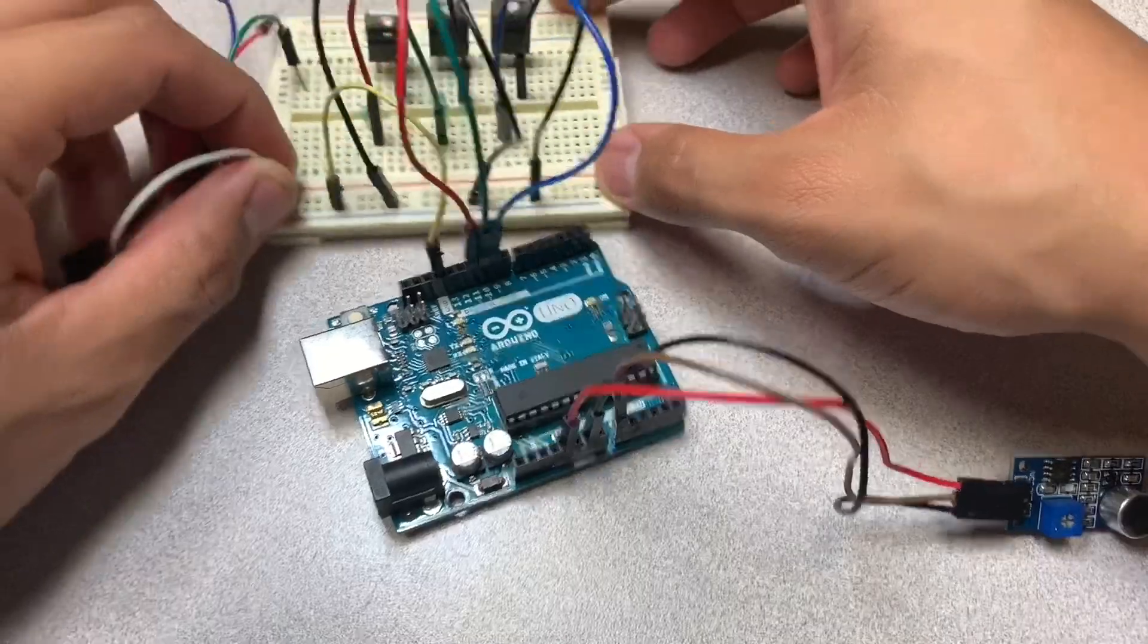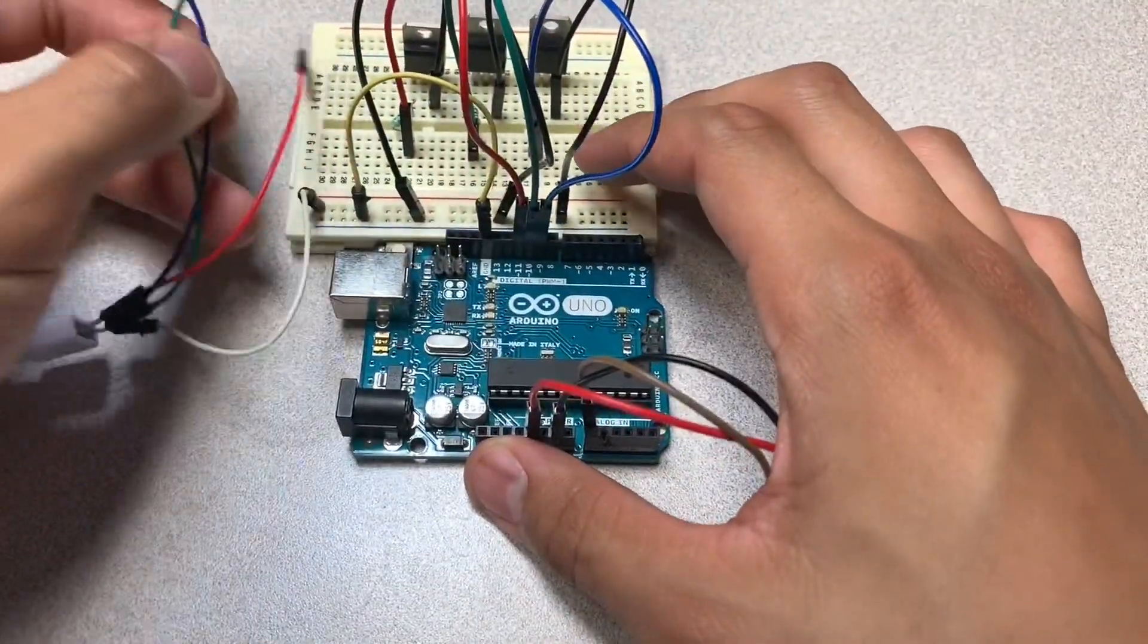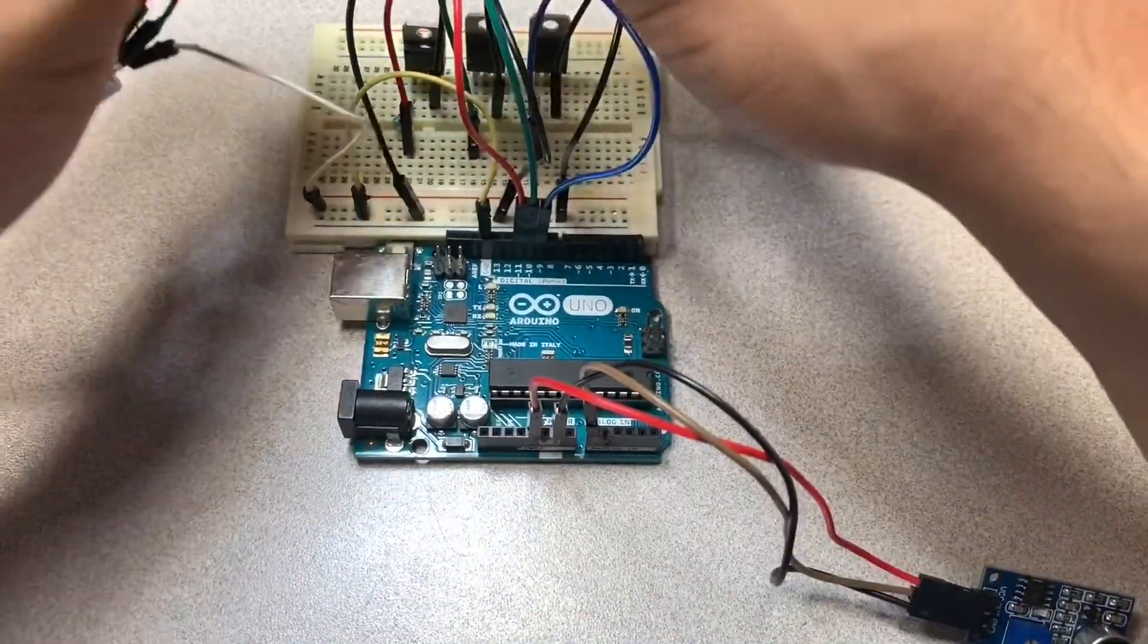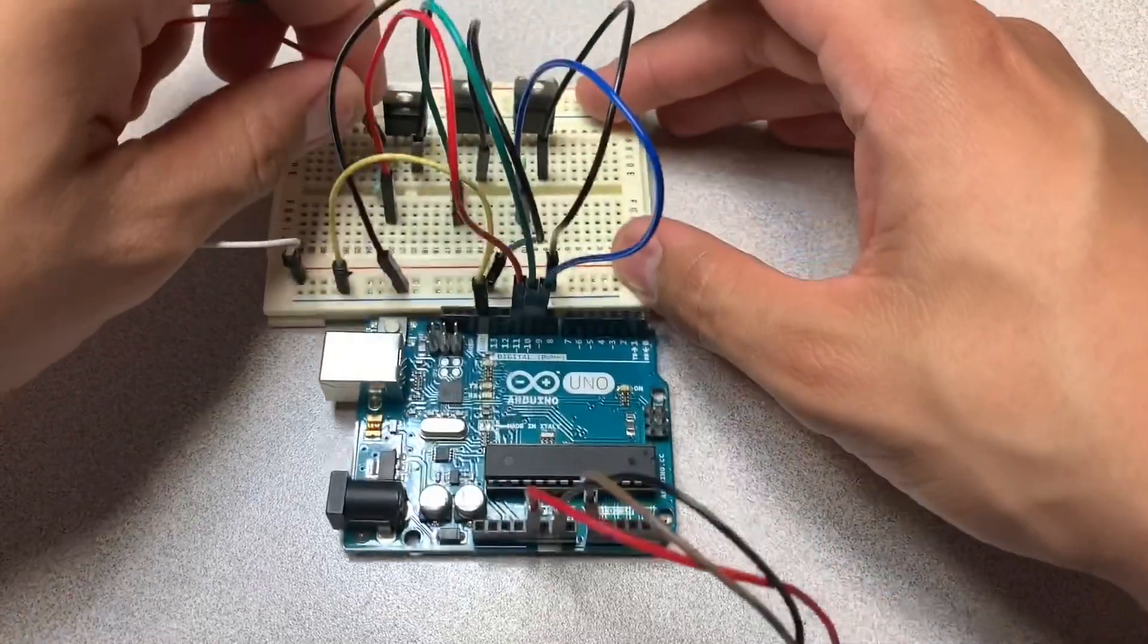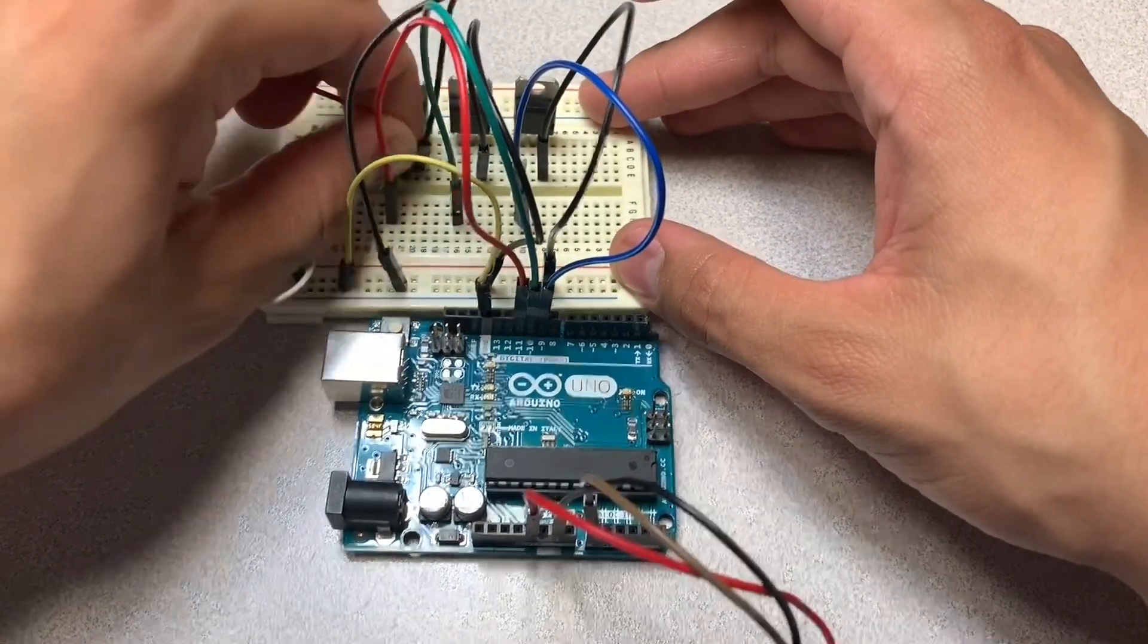Connect the white cable to our positive in the breadboard. The red one to the collector of the transistor in which you connect the Arduino's digital pin 11. Repeat for green and blue as well.